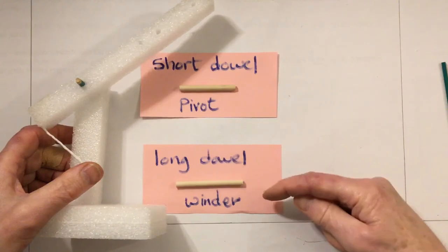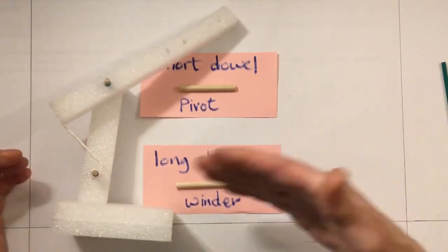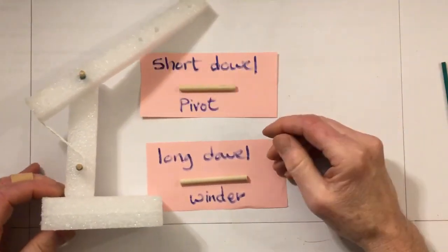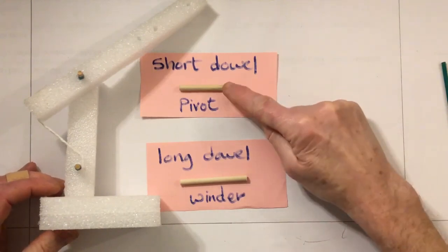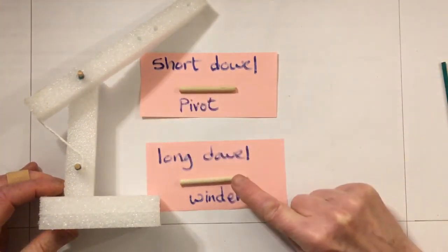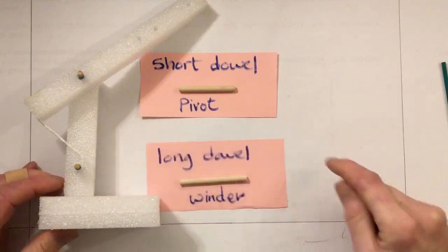But just for the moment, the basic crane or lever crane needs a short dowel for the pivot and a long dowel for the winder.